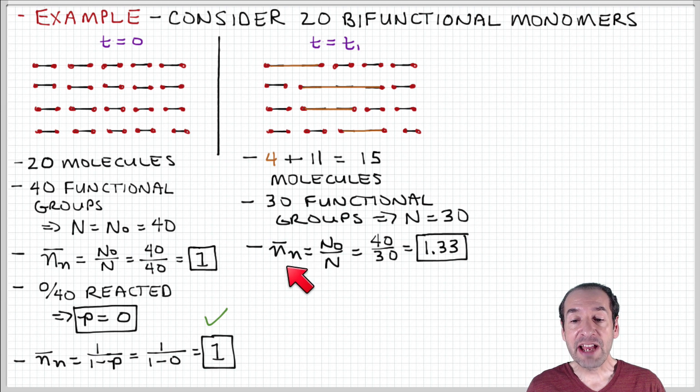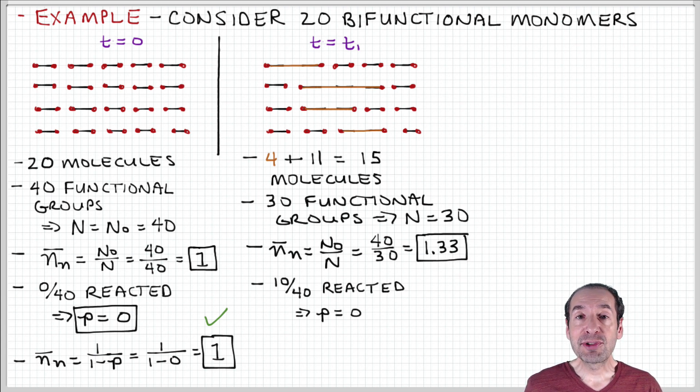Our number average degree of polymerization, then, we can determine by taking the ratio of the original number of functional groups to the number of functional groups that are remaining at time T1. That gives us a measure of the average length of chains that have been produced at this time.